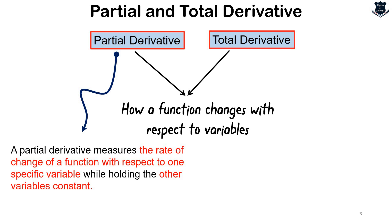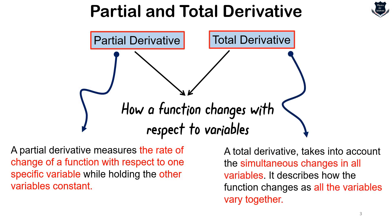The partial derivative denotes the rate of change of a function but keeps the other variables constant. The total derivative, on the other hand, takes into account the simultaneous changes in all variables — it describes how the function changes as all the variables vary together. So in summary: partial derivative is with respect to one specific variable, while in the total derivative all variables are changing together.